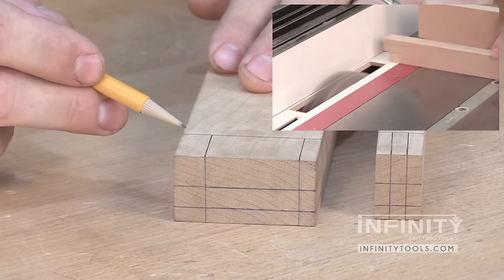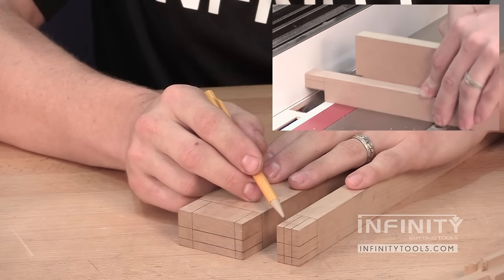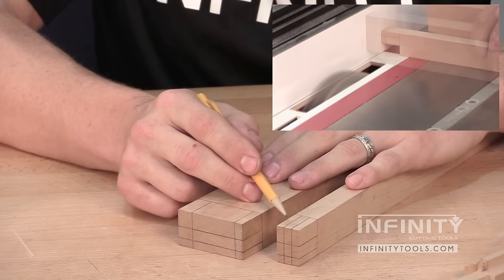I'm also going to make that same cut on one edge of my rail and I'm also going to make that cut on the top edge of my mutton bars.